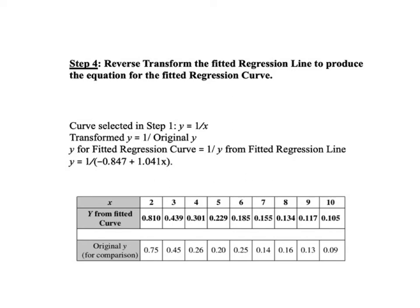Step 4 is to reverse transform the regression line to produce the formula for the fitted regression curve. To recap, the curve we selected in step 1 is Y equals 1 over X. We transformed it so that the transformed Y equals 1 divided by the original Y. So to reverse this transformation, Y for the fitted regression curve equals 1 over Y from the fitted regression line. In our example, Y is divided by the quantity negative 0.847 plus 1.041X.